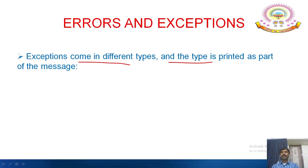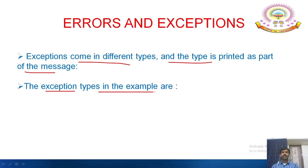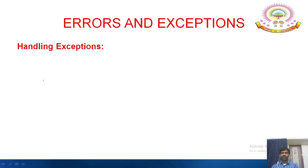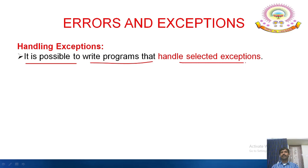Exceptions come in different types and the type is printed as part of the message. The exception types in the examples are ZeroDivisionError, NameError, and TypeError — three different types of errors we have found so far. Now, handling exceptions: it is possible to write programs that handle selected exceptions.